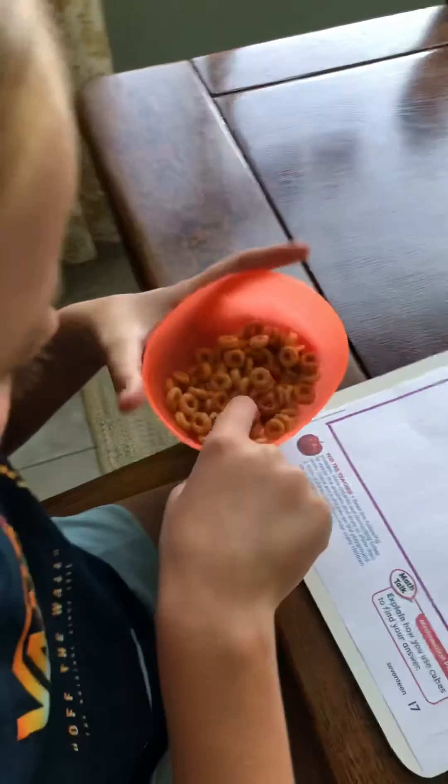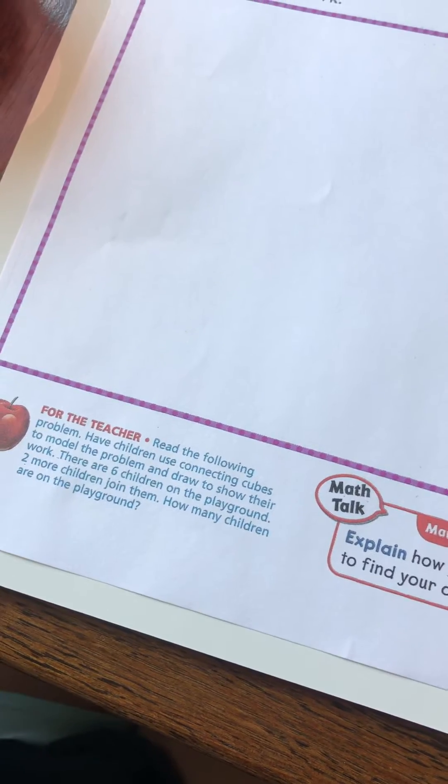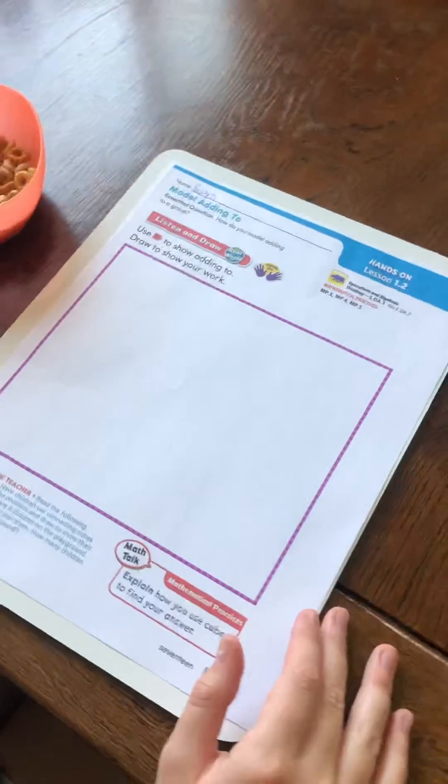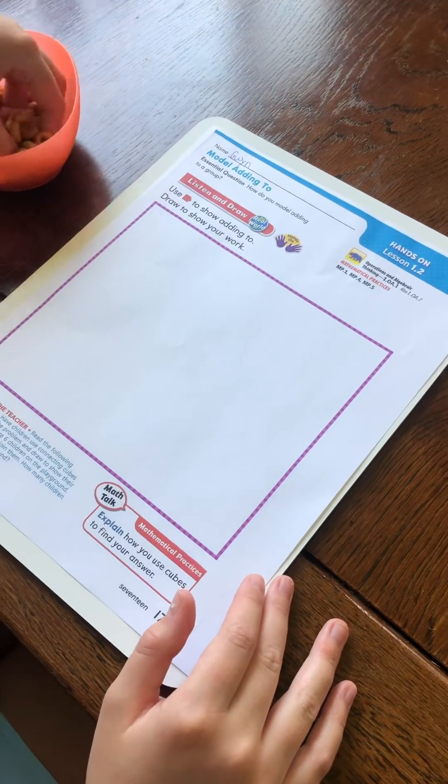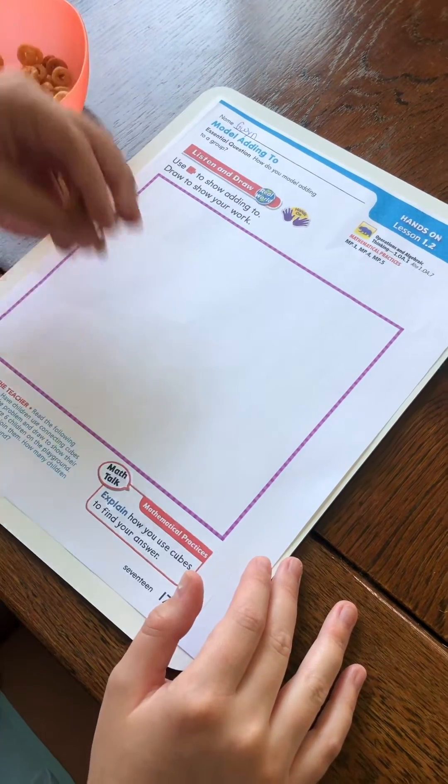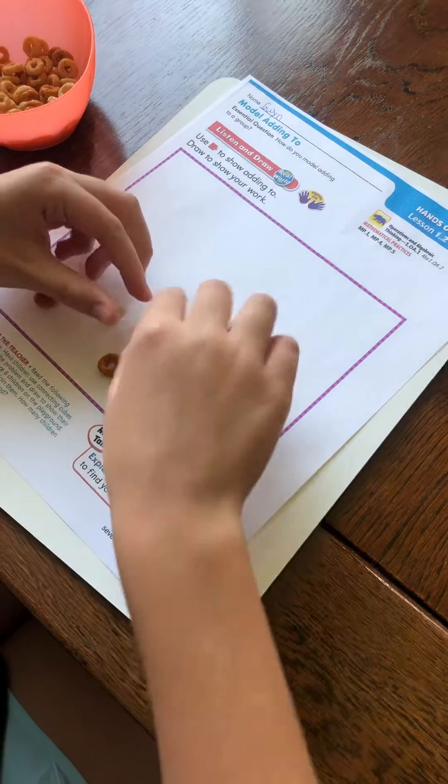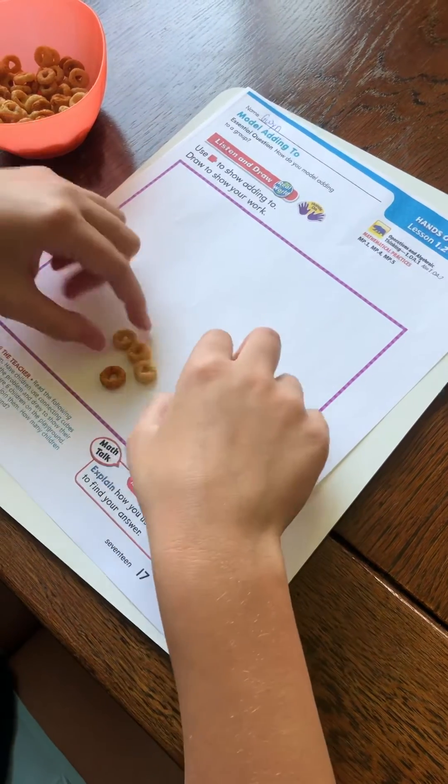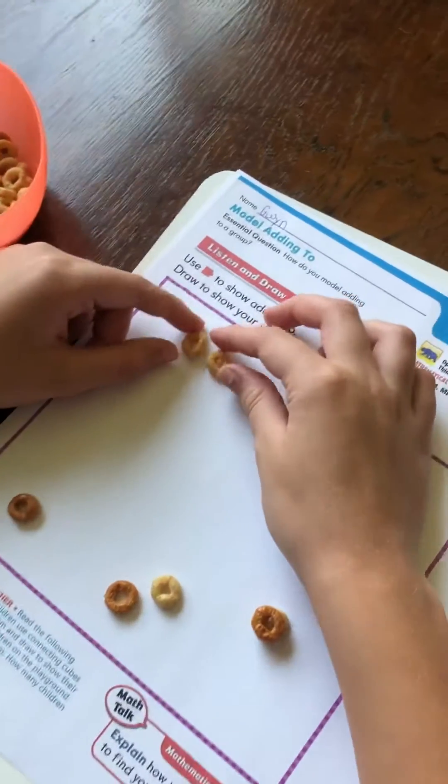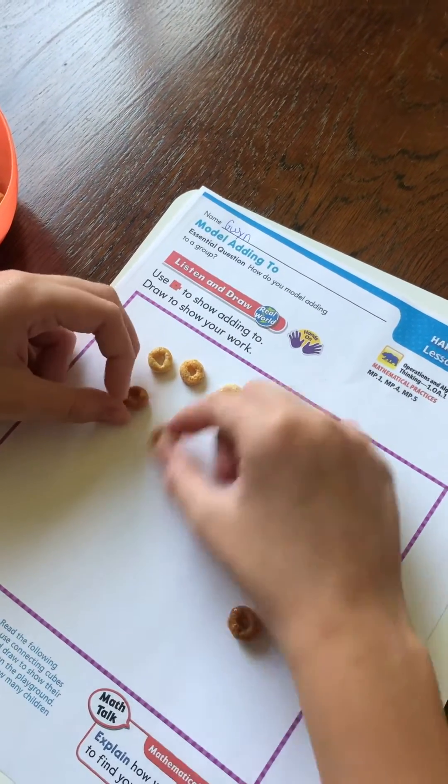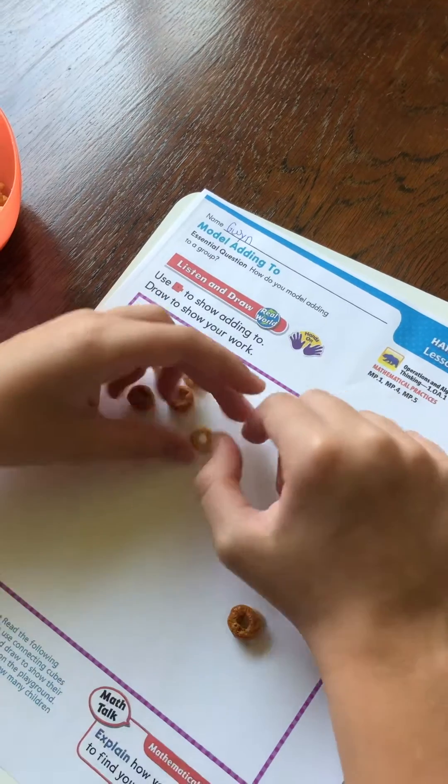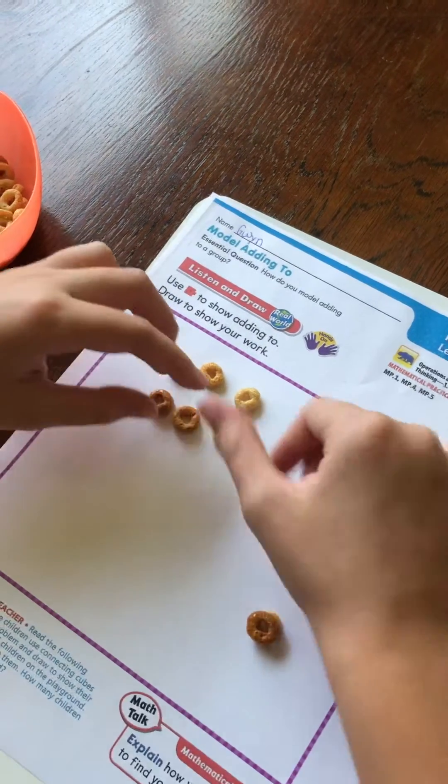And the problem says that there are six children on the playground and then two more children join them. So what are you gonna do Gwen? Well, first I'm gonna put six Cheerios on my paper. So one, two, three, four, five, six.